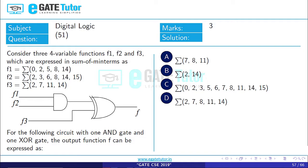These functions are expressed in sum-of-minterms as: F1 is summation of 0, 2, 5, 8, 14. F2 is summation of 3, 6, 8, 14, 15. F3 is summation of 2, 7, 11 and 14.